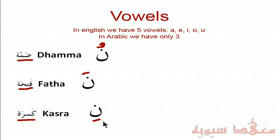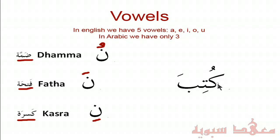So let's do an example of a word that has these three vowels. So we have a Kaf — it has a Ka sound, and on top of it is a Dhamma, giving it a U sound, so that would be Ku. Then we have the Ta with a Kasrah, so that would be Ti.